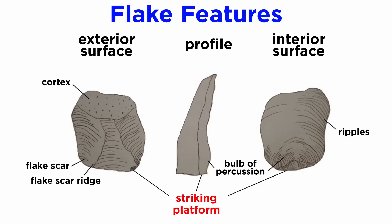At the top of the flake will be a flattened area. This is the striking platform, where the napper applied the percussive force to break the flake off the point. One side of the flake will be mostly smooth, where the flake was against the point or core. On this smooth side, directly below the platform, is a bump called the bulb of percussion. This is created by the force of the striking platform being hit. Several other factors exist to help determine if a piece of flint is an artifact, but these are the ones that we will discuss.